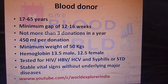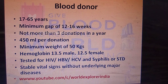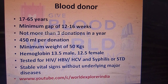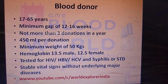The minimum gap for blood donation should be 12 to 16 weeks, that is a minimum of three to four months between each donation, and no more than three donations per year. The minimum weight of the blood donor should be 50 kg. The donor should be free from HIV, HBV, HCV, syphilis, or sexually transmitted diseases, and in good health with stable vital signs. The acceptable hemoglobin range is 13.5 g/dL for males and 12.5 g/dL for females.